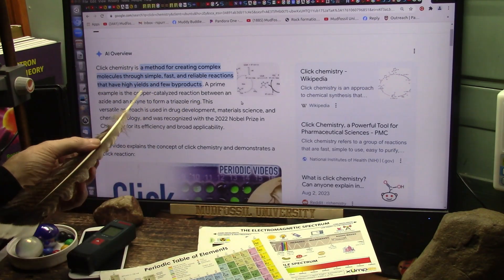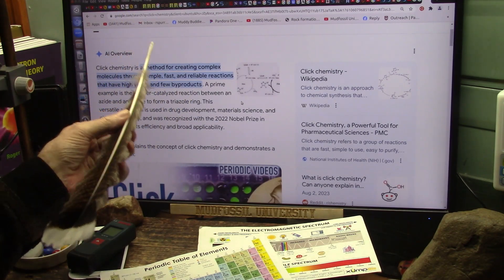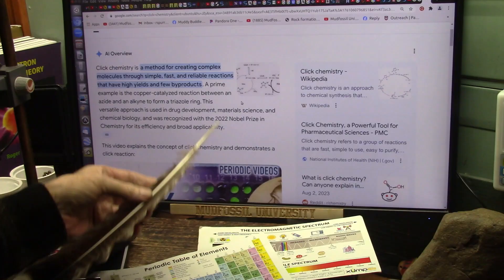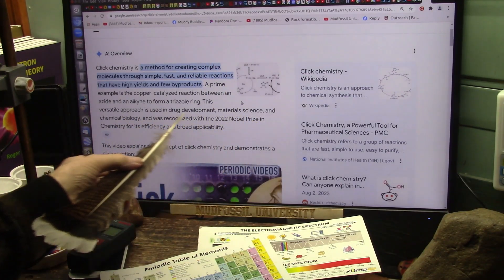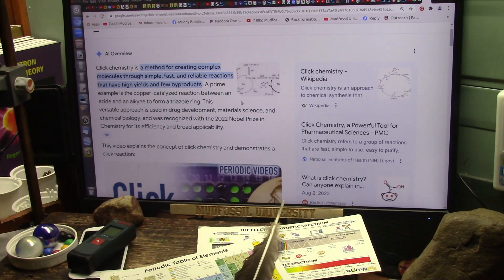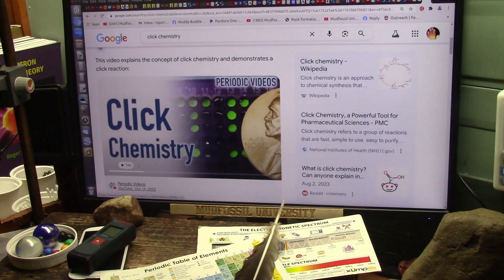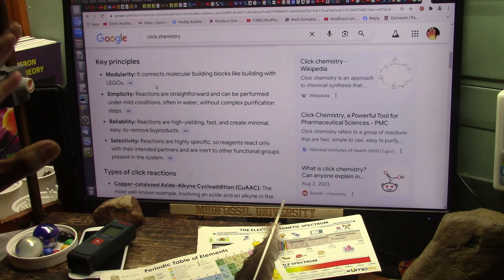That creates these very, very high yields and very few byproducts, but they're basically natural products created by the body to break things down. Now they're going to be using it for drug development, material sciences, chemical biology. And I think they got the Nobel Prize for it in 2022 for click chemistry. Now I've been looking at this, I always called it click chemistry myself because it is, as soon as it hits, click, it's done. And it talks about connecting molecular building blocks like building with Legos. And I'm going to show you, let me just show you.